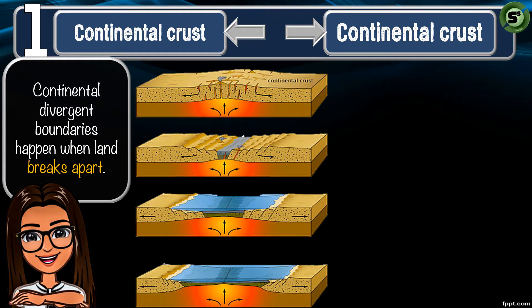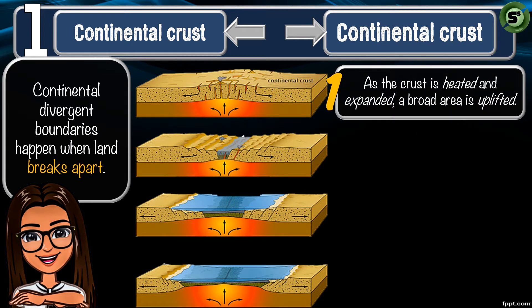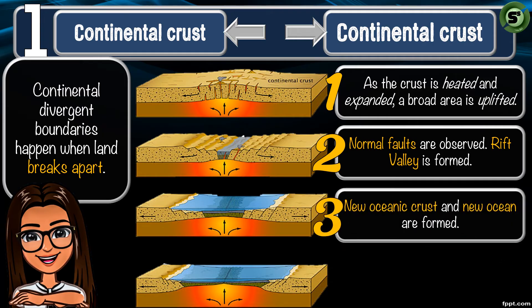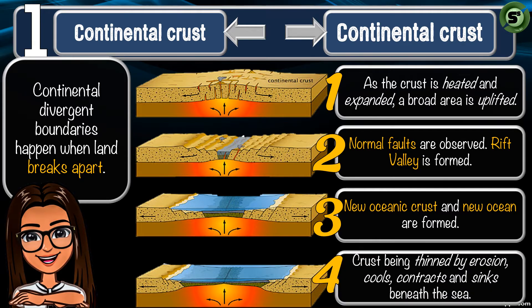The first event happens when there is a concentration of heat beneath the earth's crust called a mantle plume. As the crust is heated, it expands, making a broad area become uplifted. Normal faults and rift valleys are then formed. Rift valleys are lowlands formed when diverging boundaries take place. As the continental crusts are ultimately broken apart, hot molten materials rise and form new oceanic crust. The gap is filled by water, creating a new ocean. Over many years, the crust becomes thinner due to erosion, cools, contracts, and sinks beneath the sea, forming a wider ocean.